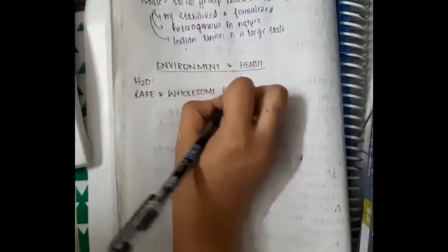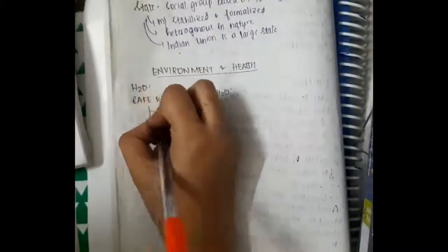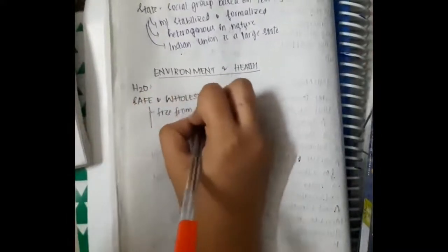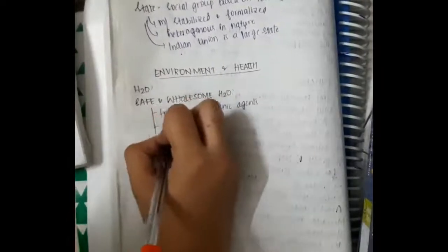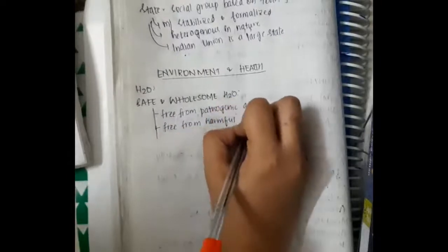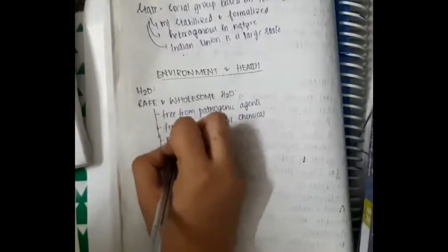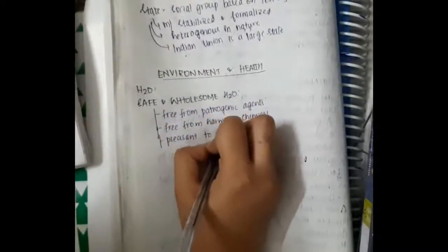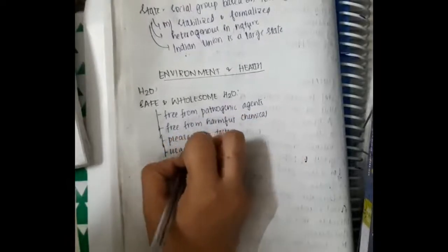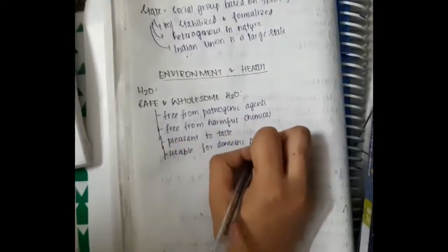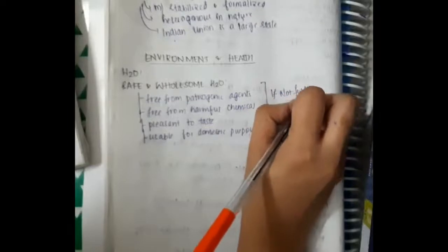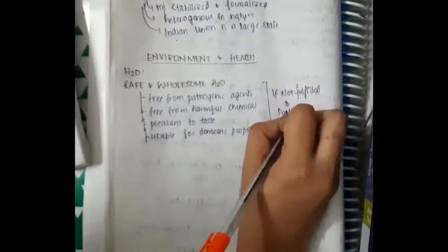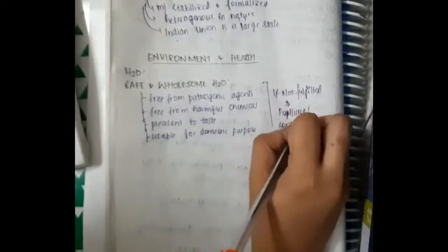The term safe and wholesome water is important. We call water as safe and wholesome if it is free from pathogenic agents, free from harmful chemicals, and it is pleasant and good to taste, and if the water is usable for domestic purposes. If these criteria are not fulfilled then we call it as polluted or contaminated water.